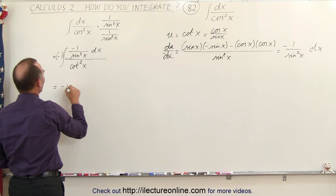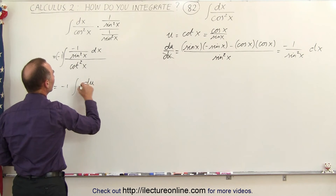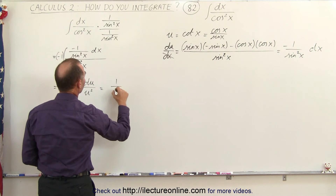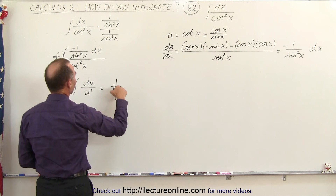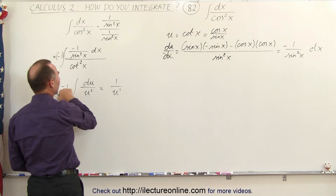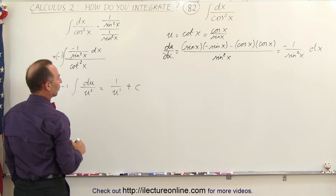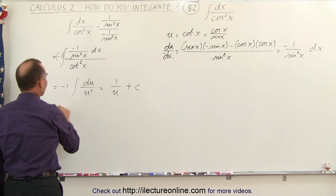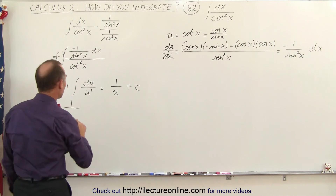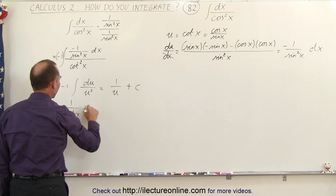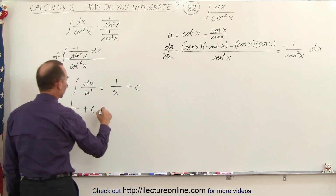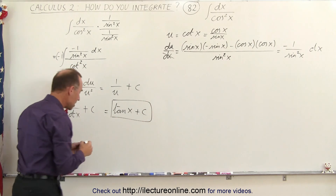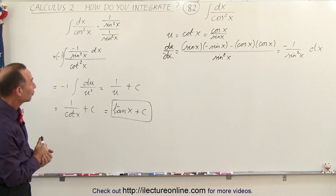So this becomes minus 1 times the integral of du divided by u squared. When we integrate that, this becomes 1 over u to the first power. That will add another negative 1 which cancels out this negative 1, and we have a constant of integration. So this is simply 1 over u, and if we plug back in, 1 over u is the cotangent of x plus a constant of integration. The inverse of the cotangent is equal to the tangent of x plus a constant of integration, and that becomes the result of the integral of 1 over cosine squared of x.